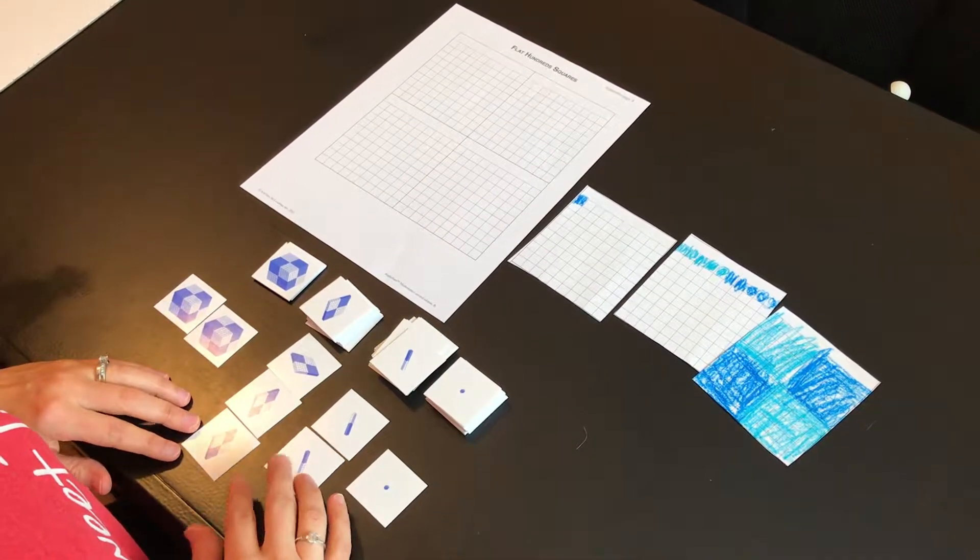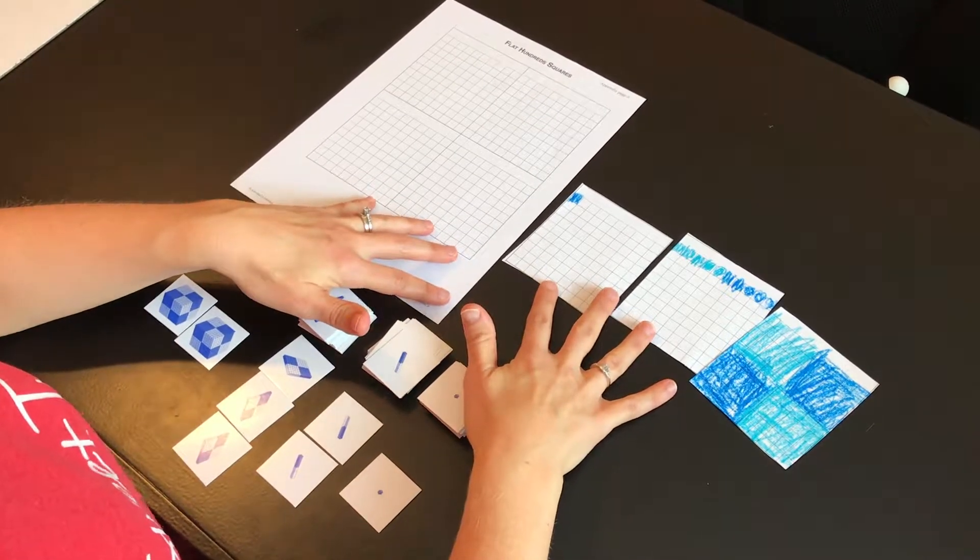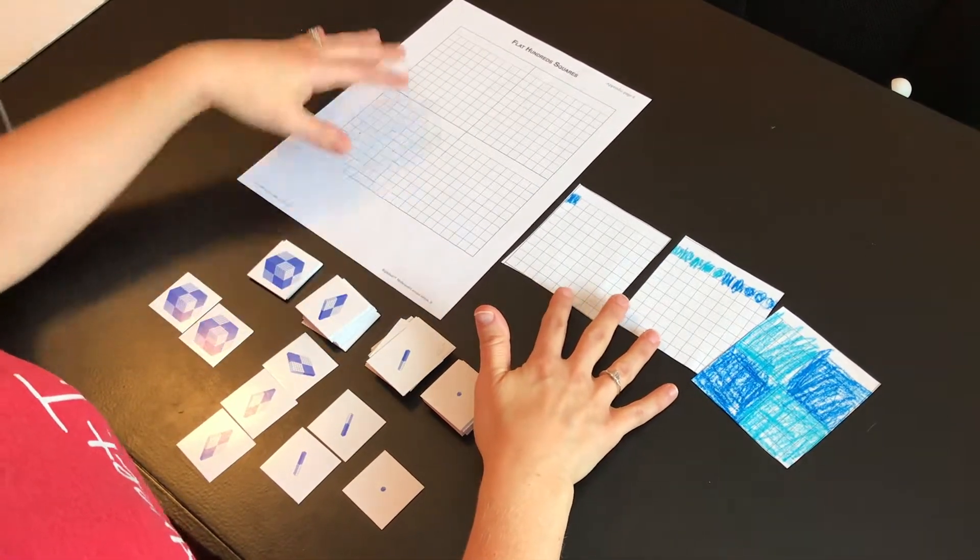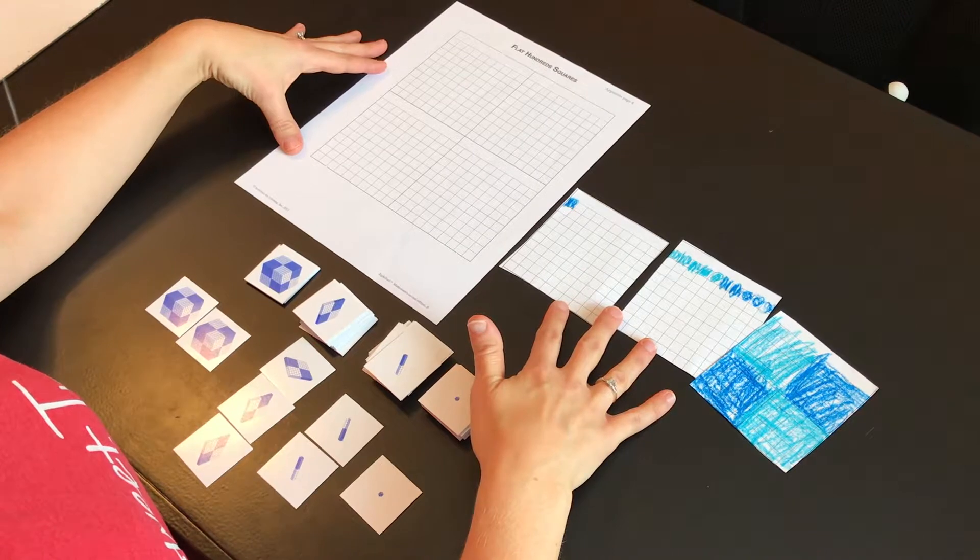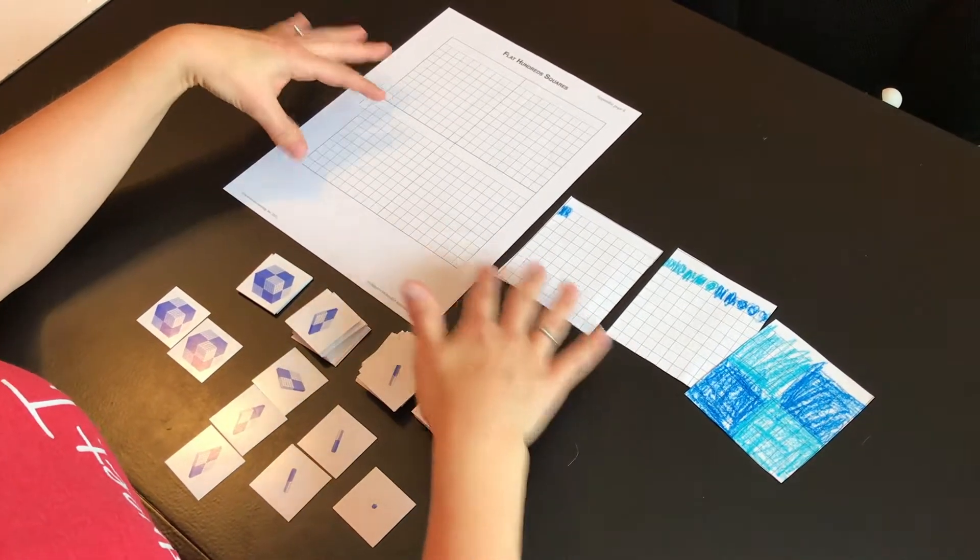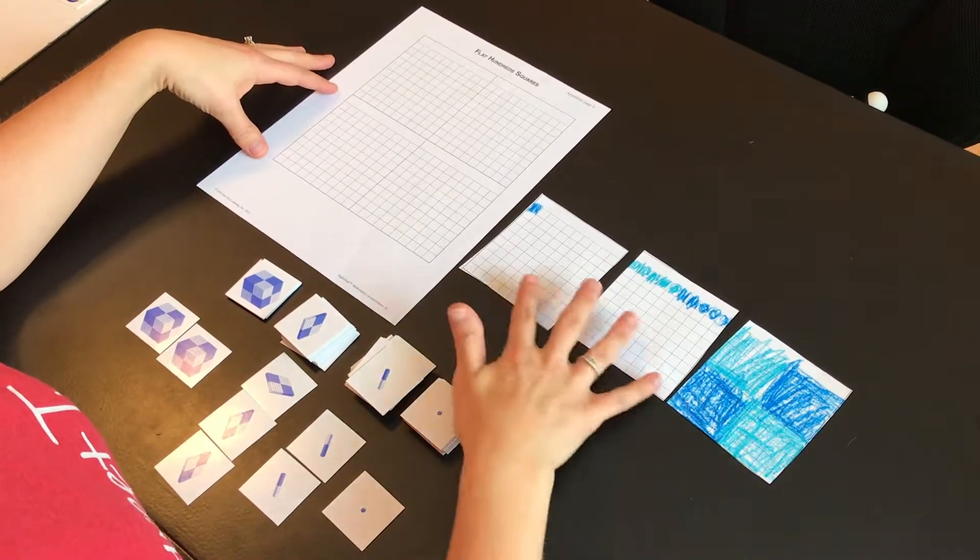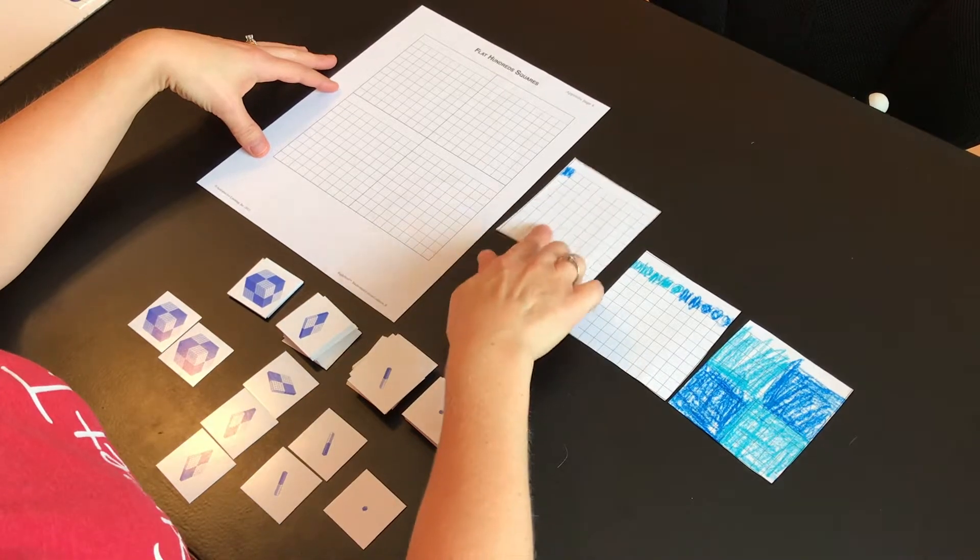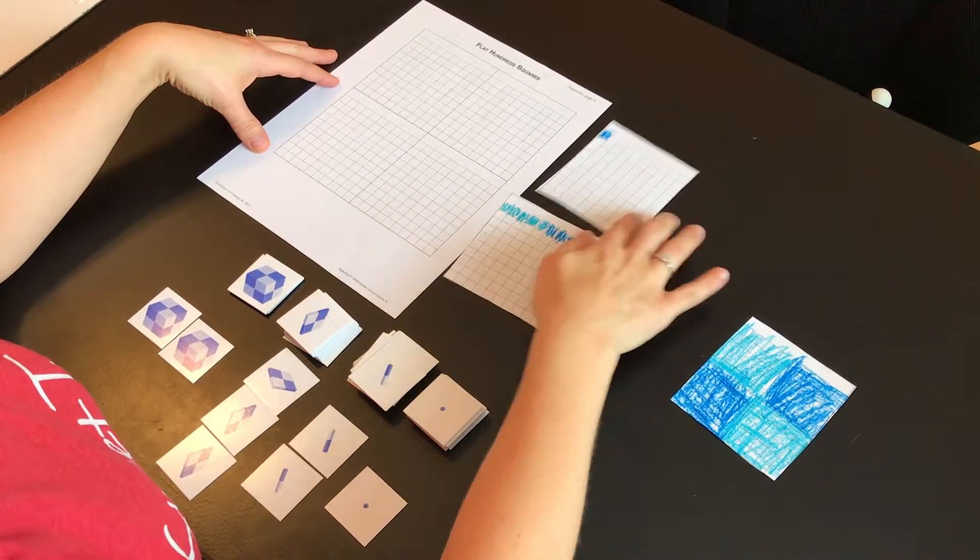Another thing is, if you don't have these cards, another option you could do is the flat hundreds squares. So you could either make this or get these pages, and then cut them out. And as you can see here, I had my daughter cut some out. She did a ones card. I had to do a tens card.